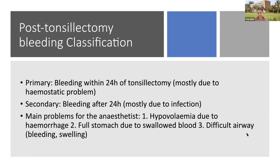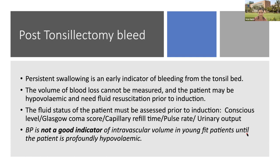Main problems for the anesthetist in post-tonsillectomy hemorrhage are hypovolemia due to hemorrhage — the patient must have swallowed a sufficient amount of blood by the time it is detected, so we assume the patient is full stomach. There is concern of difficult airway due to recent airway surgery with bleeding and edema. The volume of blood lost cannot be measured, so fluid resuscitation must be initiated. Fluid status must be assessed prior to induction by consciousness level via GCS, capillary refill time, tachycardia, and urine output.